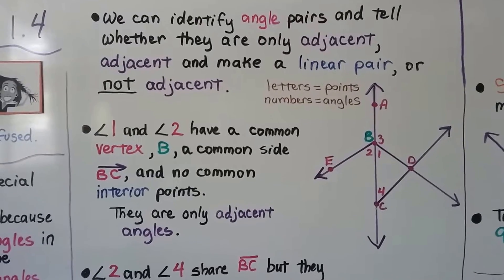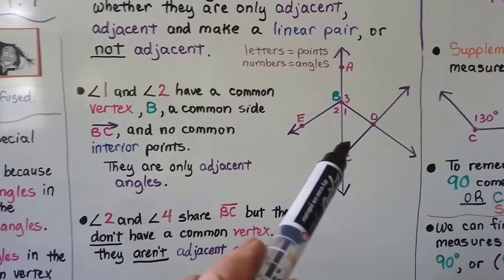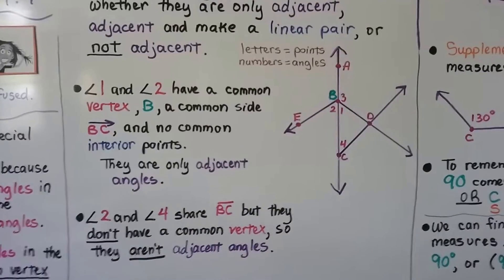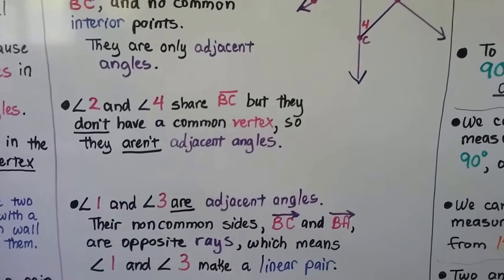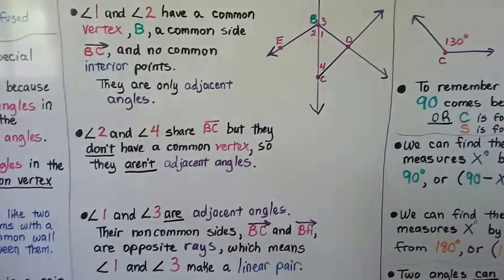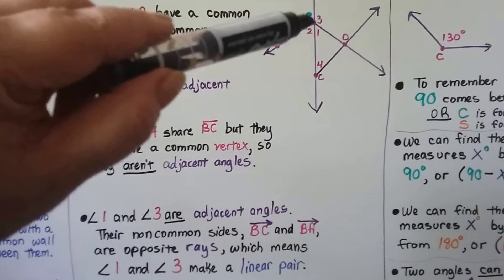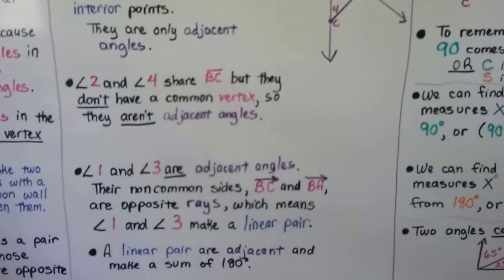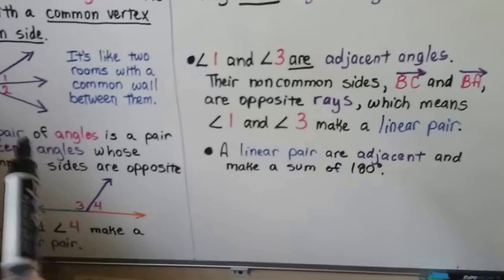Angle 2 and angle 4 share BC, but they don't have a common vertex, so they aren't adjacent angles. Angles 1 and 3 are adjacent angles — right next to each other. Their non-common sides, ray BC and ray BA, are opposite rays, which means angle 1 and angle 3 make a linear pair.